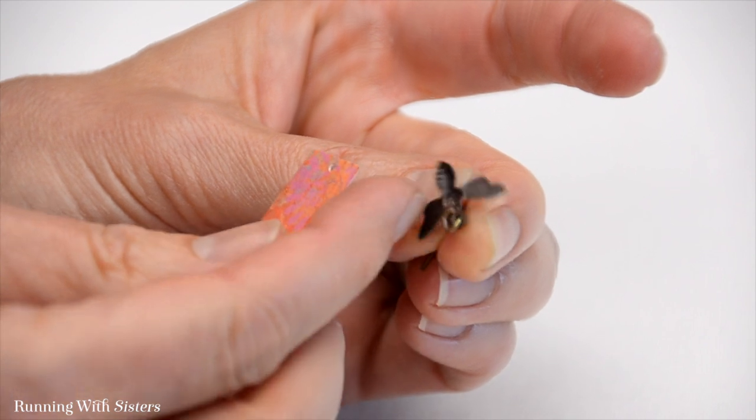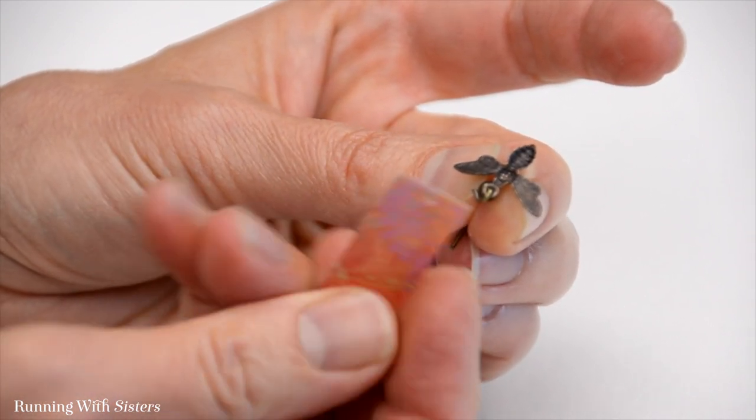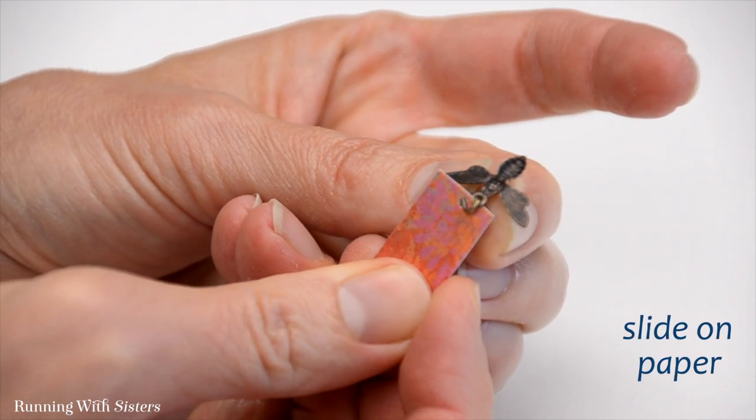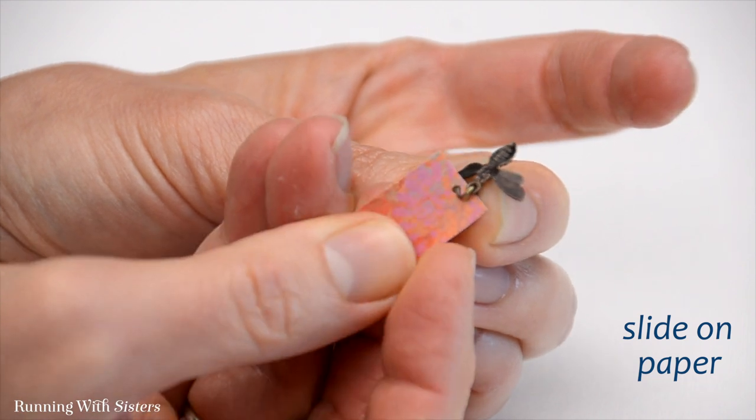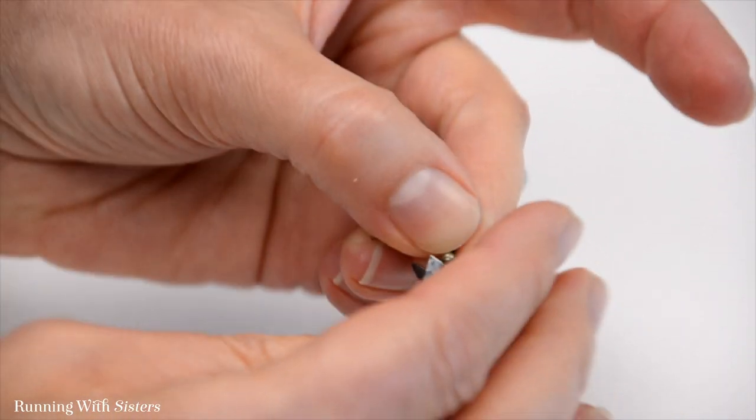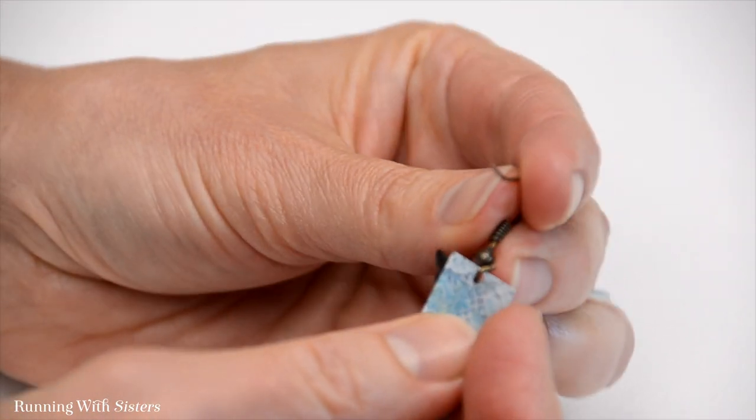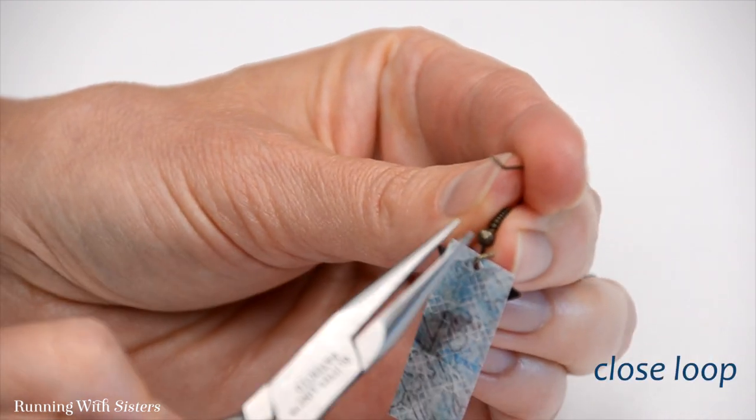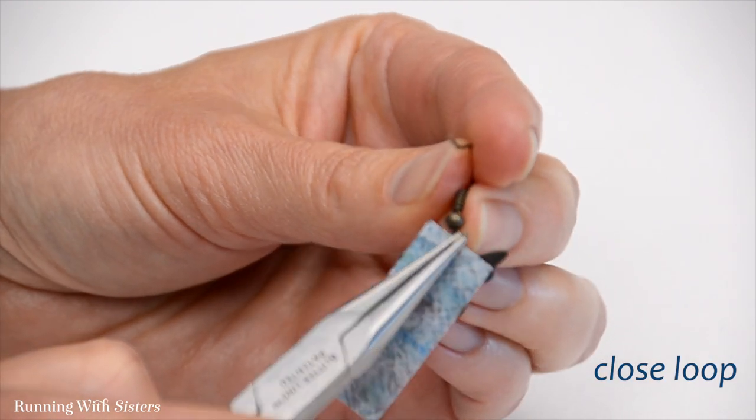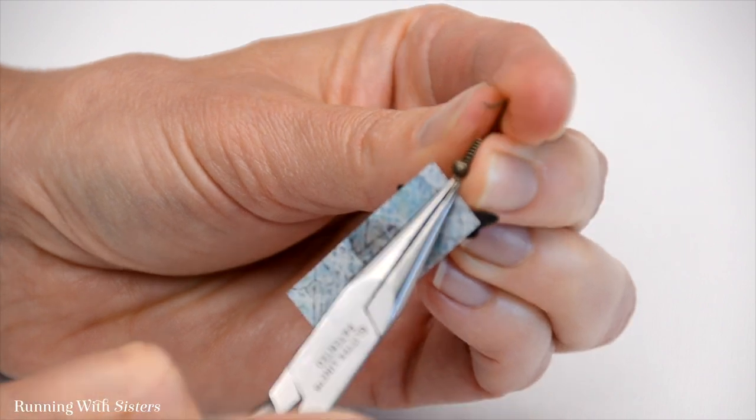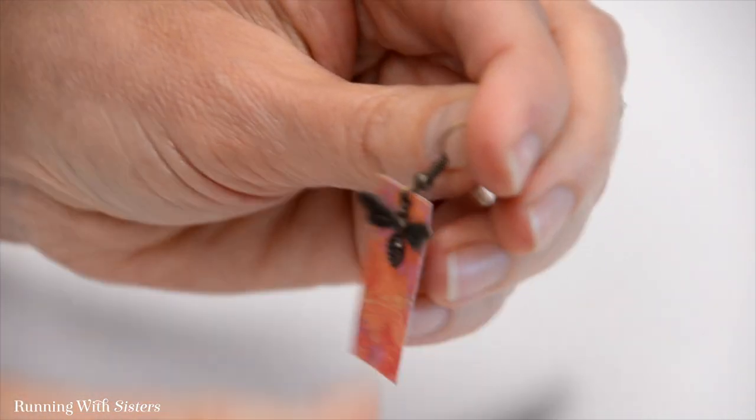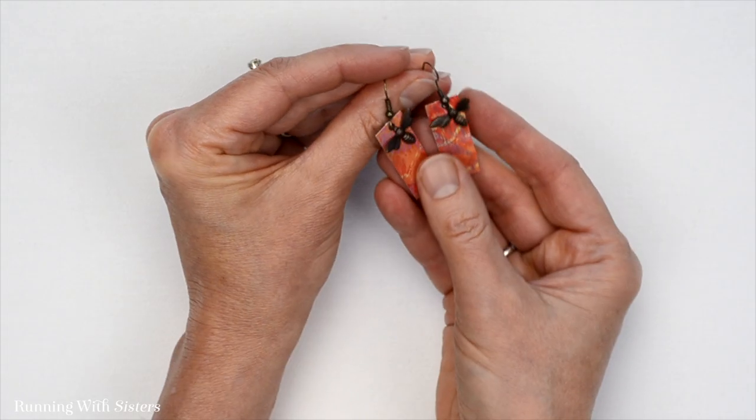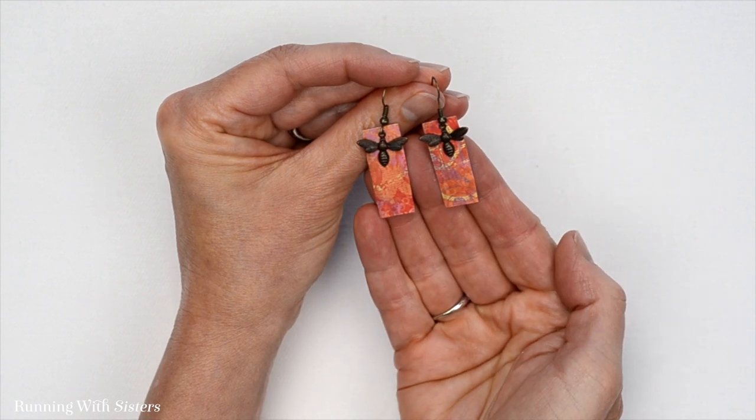Then I'm going to take my paper and make it face forward and slide it onto my earring wire like that. Then I'll flip it over. I'm going to close my loop on my earring wire the same way I did before, just by rotating it closed. And there is our darling pair of paper earrings.